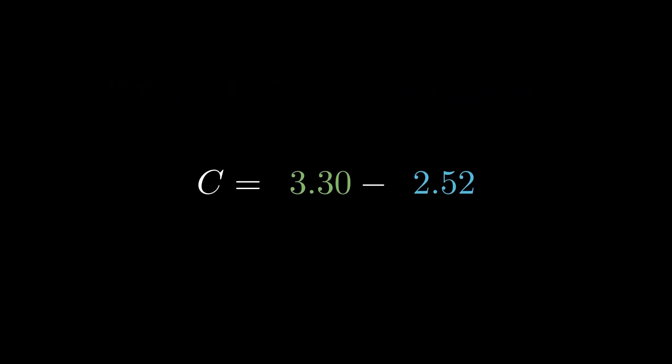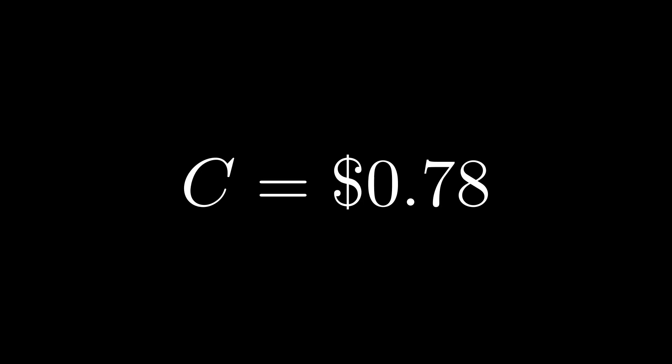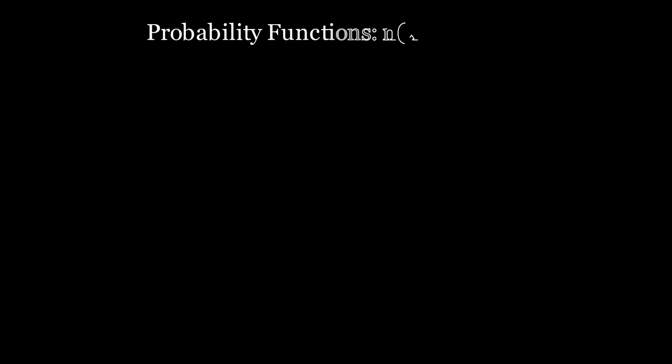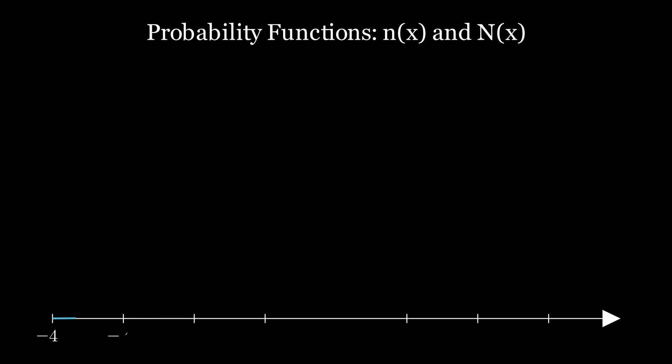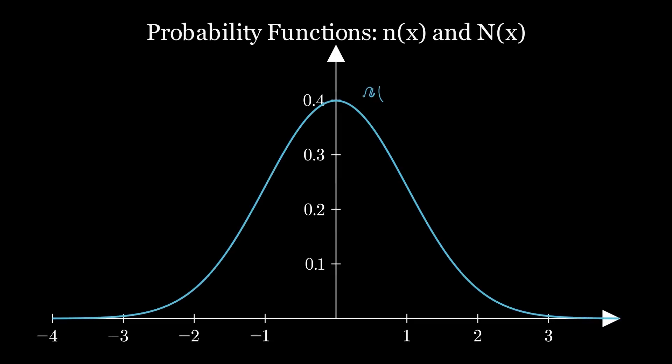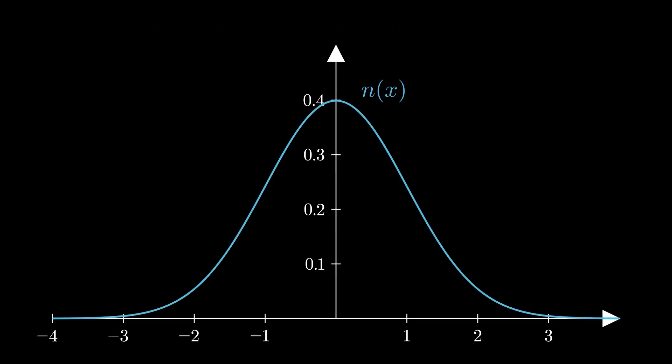From this, we can conclude that the current fair value of the option is the difference between these two values, or $0.78. Before continuing, let's define two important probability functions: lowercase n(x) and uppercase N(x).